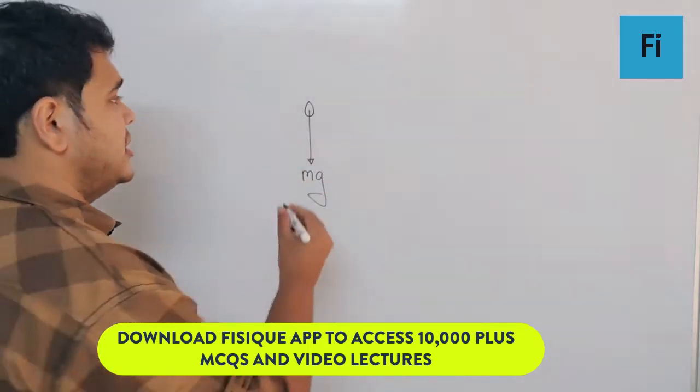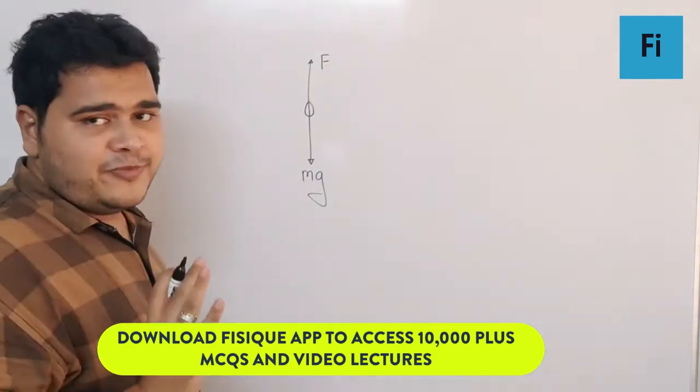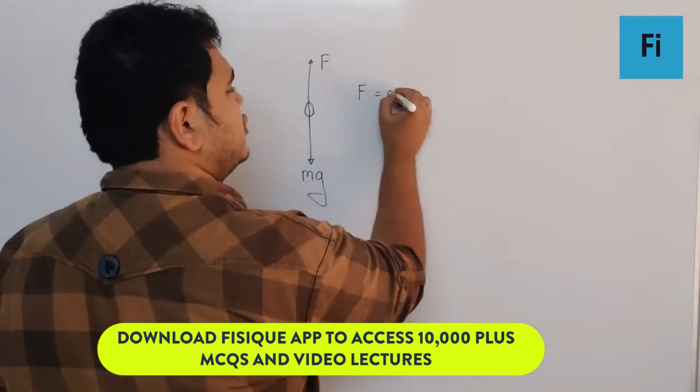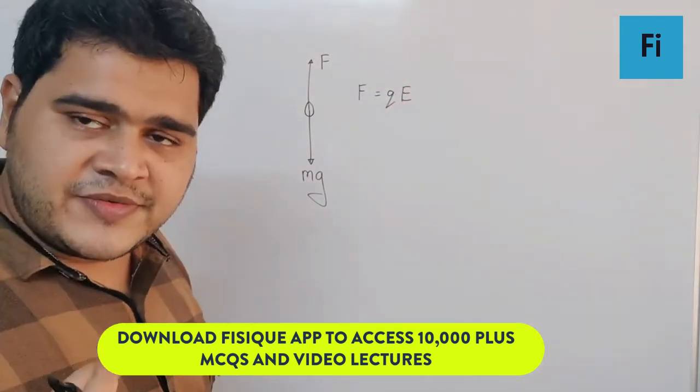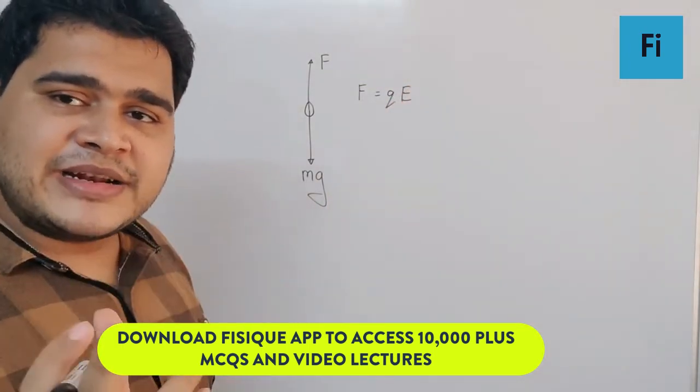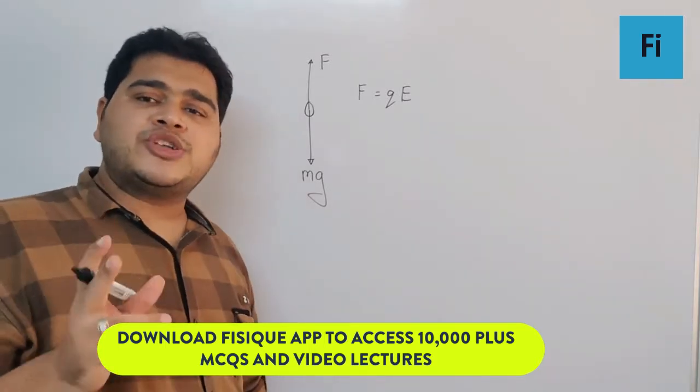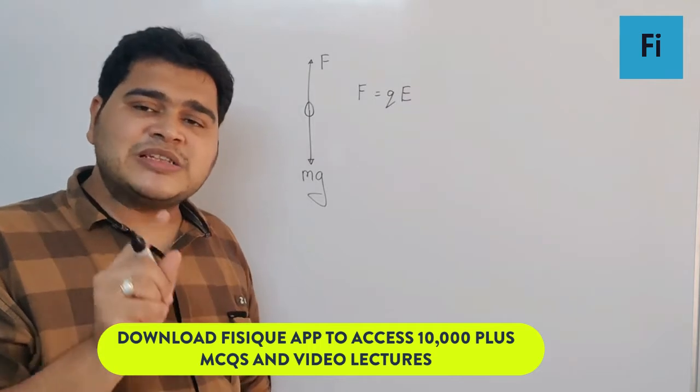If you want to balance its weight, you have to apply a force upward, so the electrostatic force will act upwards. We know F is equal to QE, where if the charge is positive, the direction of force and electric field is the same. If the charge is negative, then the direction of force and electric field will be opposite.